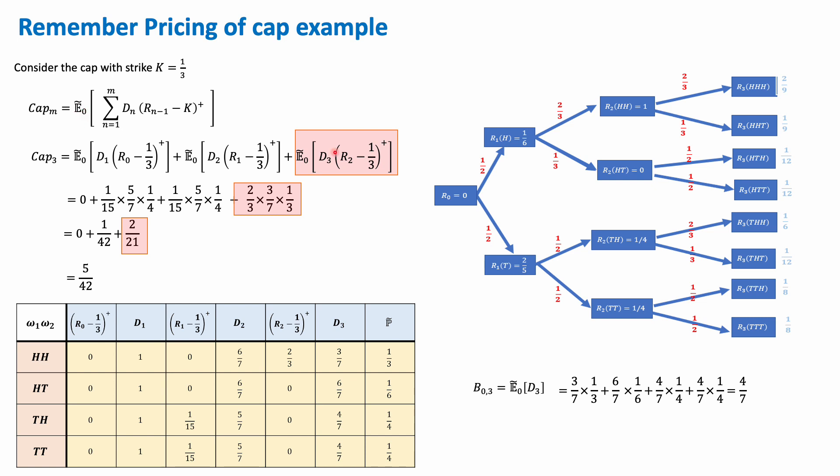So in this example, what we will do is price the same caplet, but by changing the measure from the risk-neutral world to the forward measure. And see that the price we find is exactly the same price for the caplet, which is 2 over 21. So let's go ahead now and price this using the forward measure.